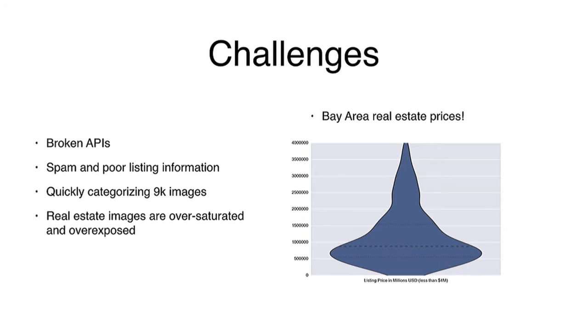Challenges included broken APIs, lots of spam, lots of junk. One issue that was kind of obvious to most people I talked to, but I totally didn't anticipate, was this violin plot showing the price of listings in the Bay Area. I'm from the Bay Area, so that's why I used it as my training set — but that was a mistake, because the median sale price there is around $900,000, whereas around the U.S. it's $200,000. So that gave me a lot of issues.